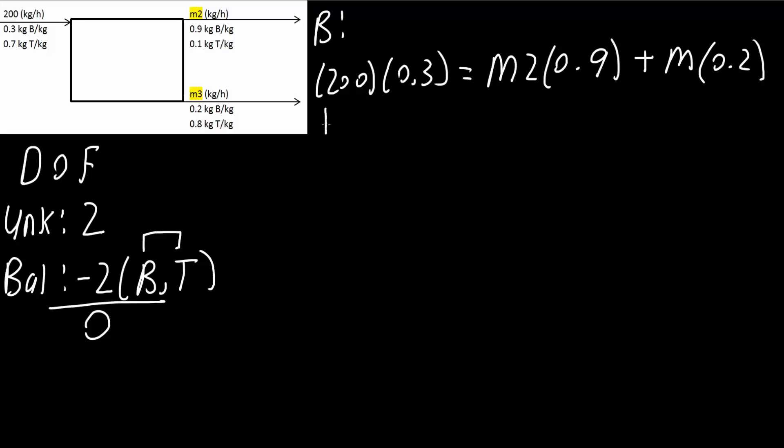Next, we'll do a total balance. So, that's going to be 200 is equal to M2 plus M3.